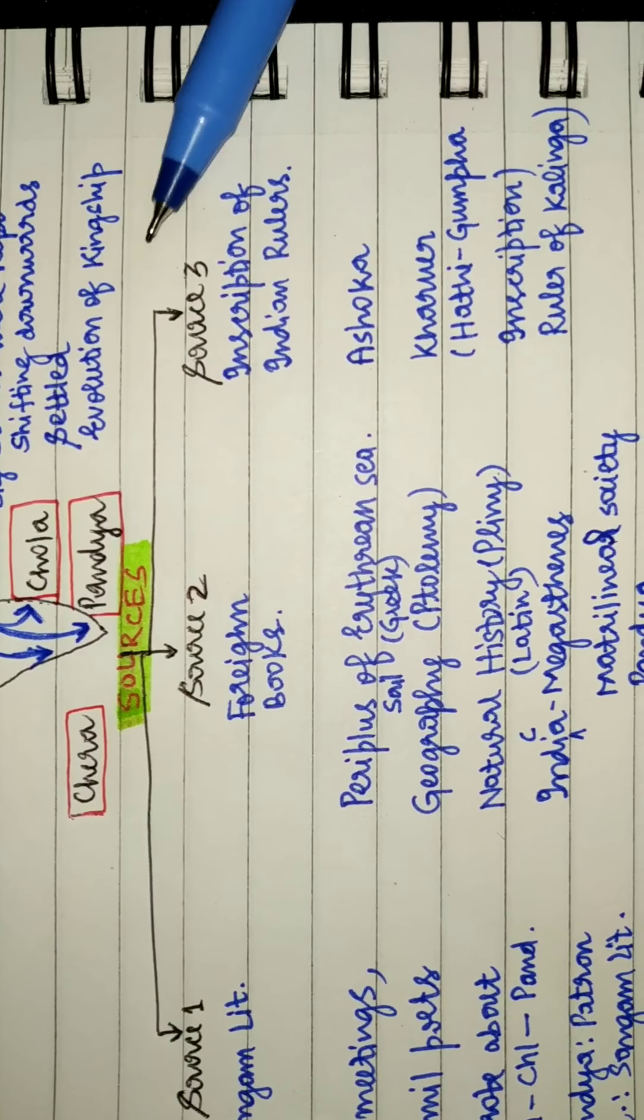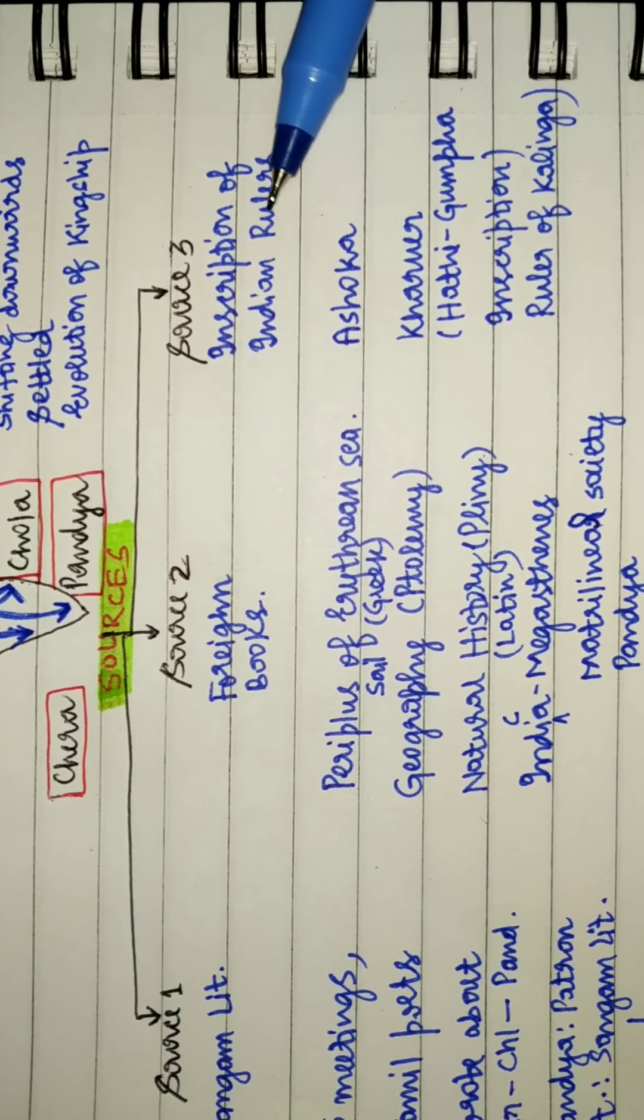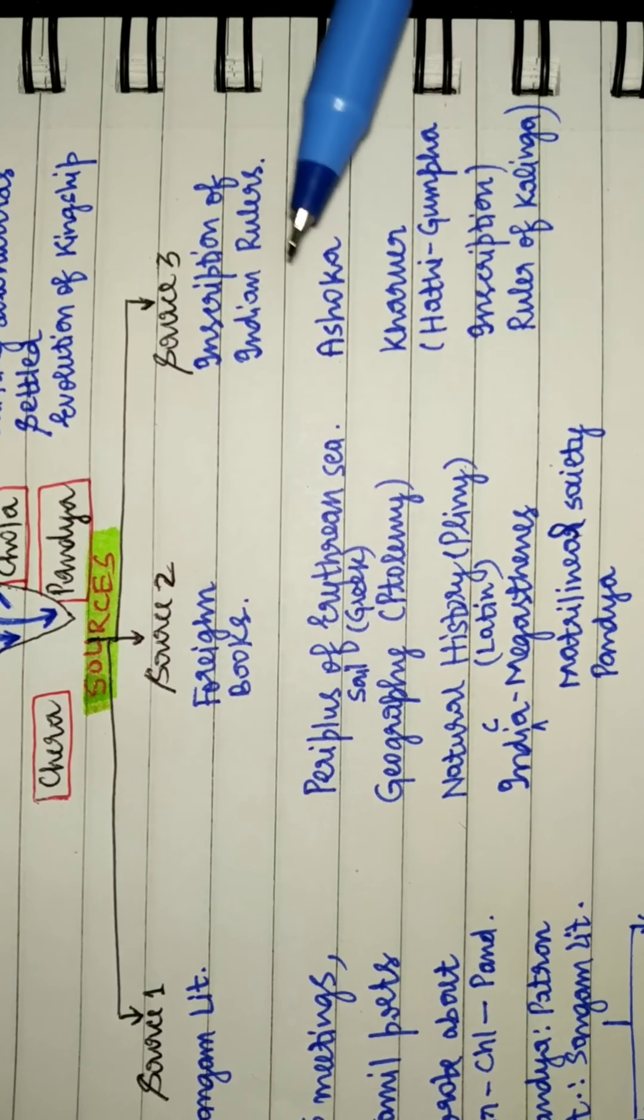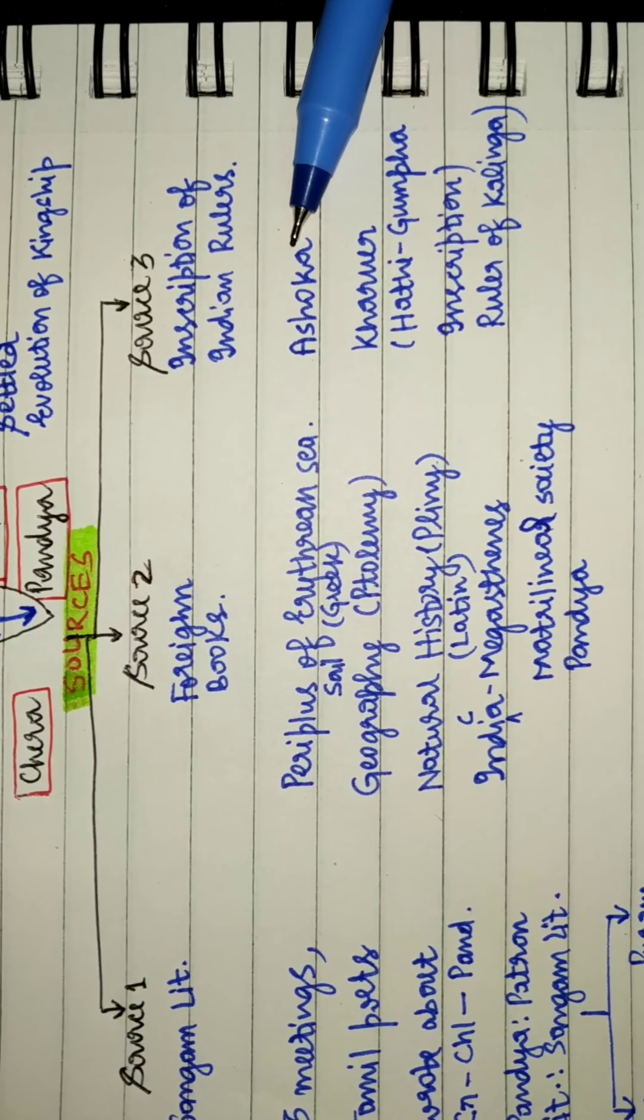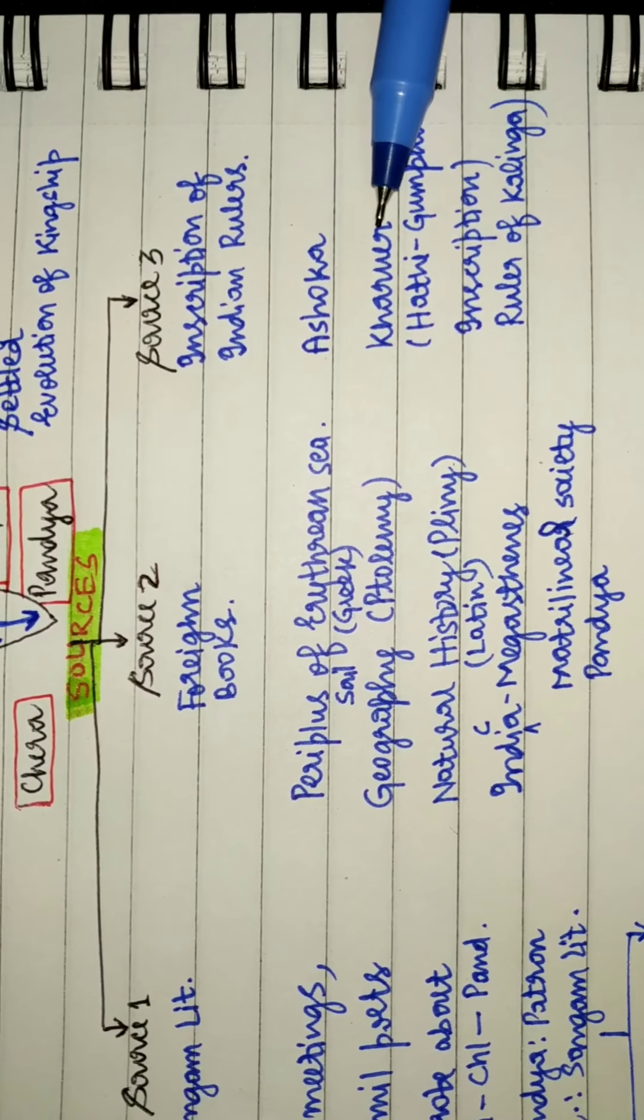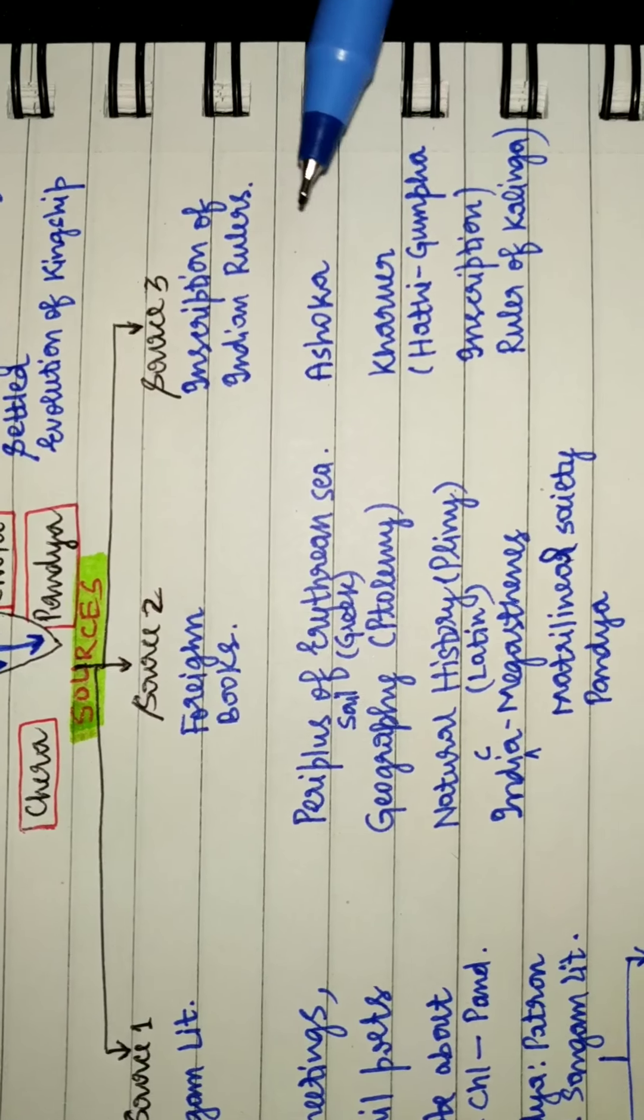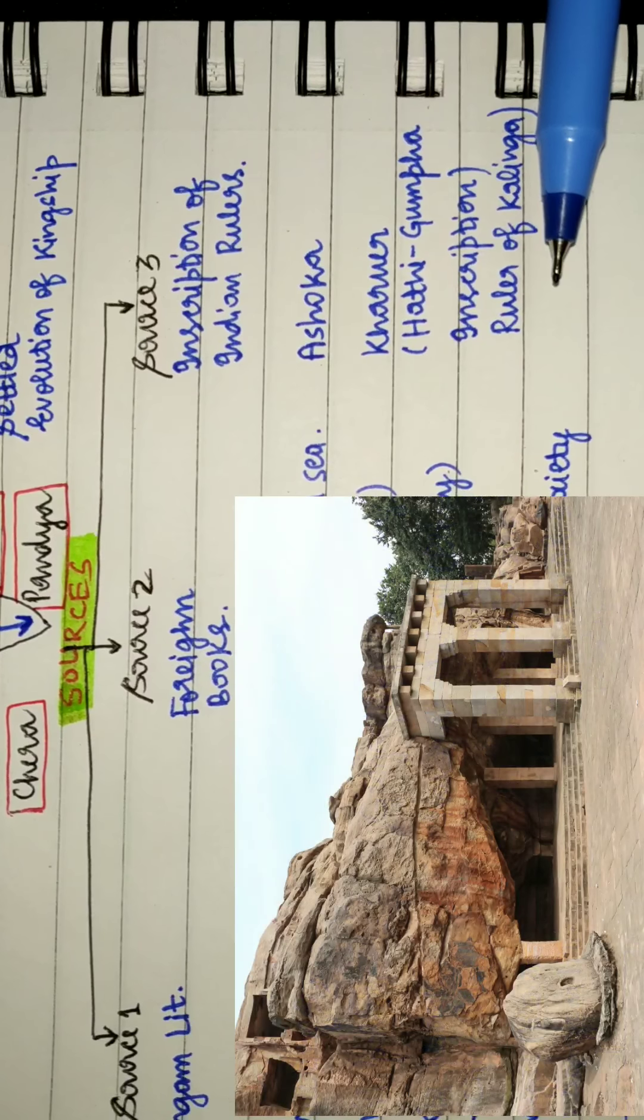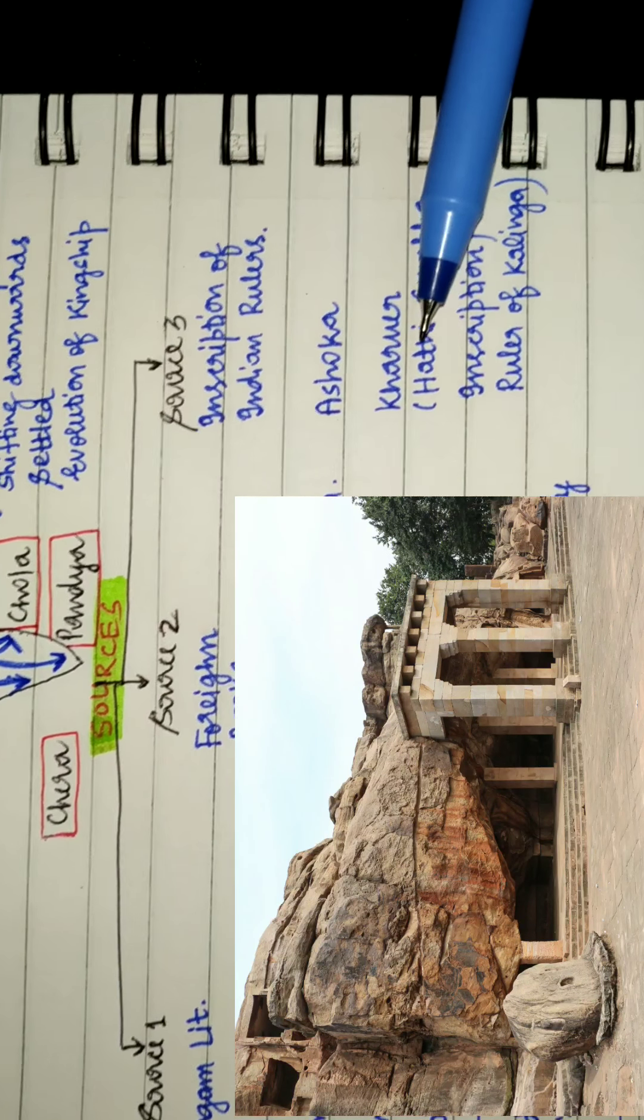Source three is the inscription of Indian rulers such as that of Ashoka and also Kharvel. Kharvel was the ruler of Kalinga and the inscription is in Hathi Gufa.